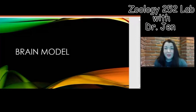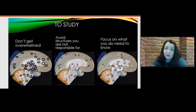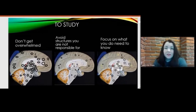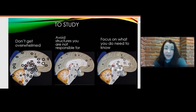Today we're going to talk about the brain model along with the purple nervous system model, and for the most part we're going to focus on the brain model. When you look at the brain model, a lot of times students get overwhelmed and there's really no reason for that. There are functions and structures you need to know, but students often think there are over a hundred things to know, and that's just not the case.